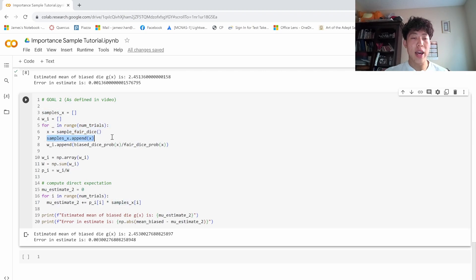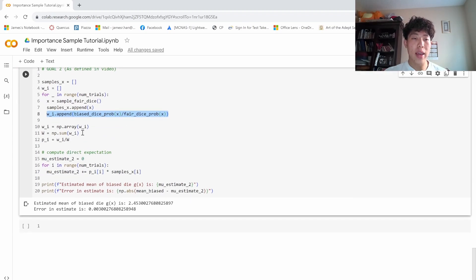So with all of these samples, we're going to sample the dice, then keep track of what that sample was, and also append what the importance factor weighting was. Then we simply want to calculate the normalizing factor w, which is the sum of all of our importance factors, and then define our new probability distribution, where pi is equal to w_i divided by w.